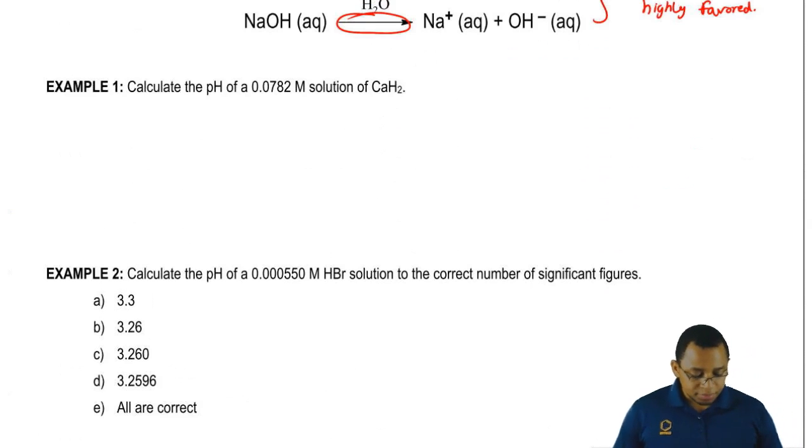In example 1, it says calculate the pH of a 0.0782 molar solution of calcium hydride.